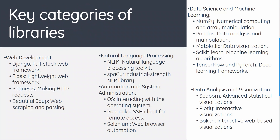Next, we have key categories of libraries. For each topic, I've given an example of the library. For web development, we can use Django, Flask, Requests, and BeautifulSoup. For natural language processing, we have NLTK and spaCy. For automation and system administration, we have OS, Paramiko, and Selenium. For data science and machine learning, NumPy, Pandas, Matplotlib, scikit-learn, TensorFlow, and PyTorch. For data analysis and visualization, we have Seaborn, Plotly, and Bokeh. You can take a screenshot to keep this reference handy.